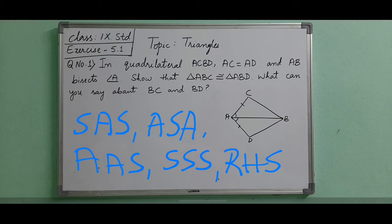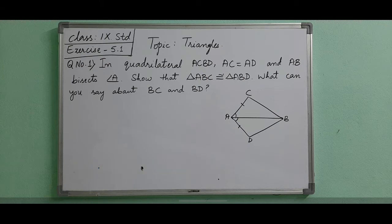Let's start with the first question. The question is: given a quadrilateral — a quadrilateral is nothing but a four-sided figure — in quadrilateral ACBD, as shown in the given figure, AC is equal to AD, and AB bisects angle A. What do you mean by bisect?